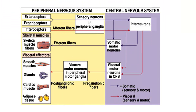This image also illustrates nerve transmission between the peripheral nervous system and the central nervous system. From the peripheral nervous system, we have receptors — exteroceptors, proprioceptors, and interoreceptors — which receive stimuli and then transmit it into the sensory neurons in the peripheral ganglia through the afferent fibers, and then transmitted to the central nervous system, where it crosses the interneurons, and the information is processed.